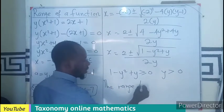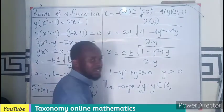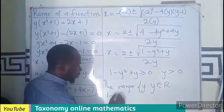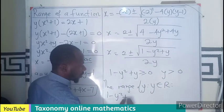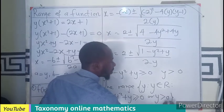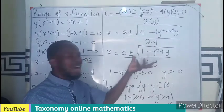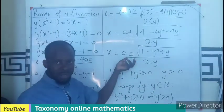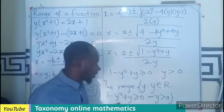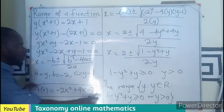So the range is the set of values of y such that y belongs to the real numbers, subject to the conditions that 1 − y² + y ≥ 0 and y > 0. These are the conditions on the real numbers that satisfy the solution and make the expression defined. This is the range of values for this function.